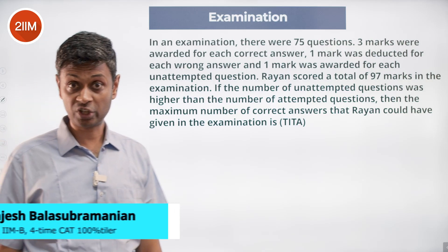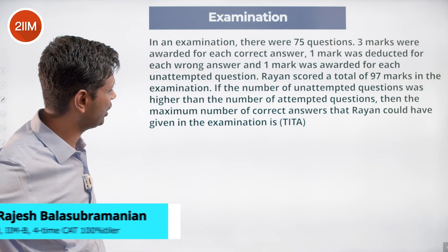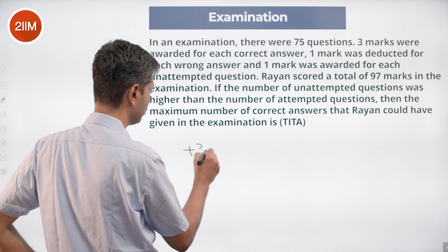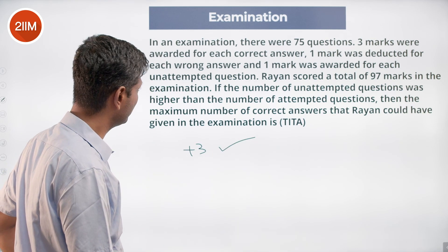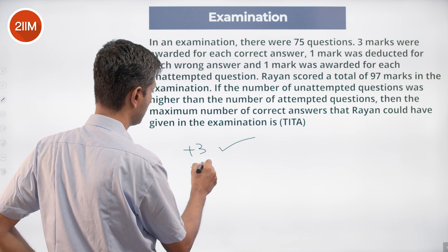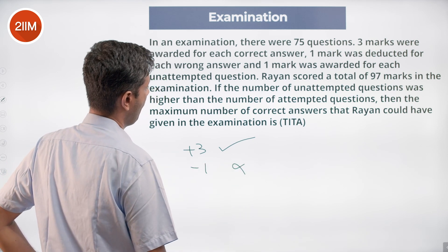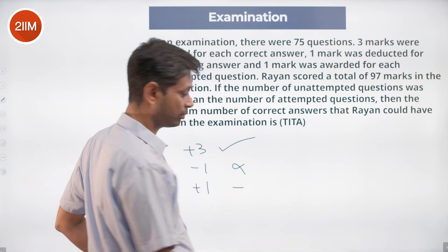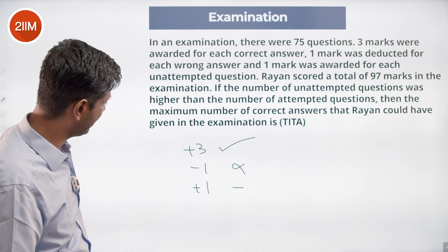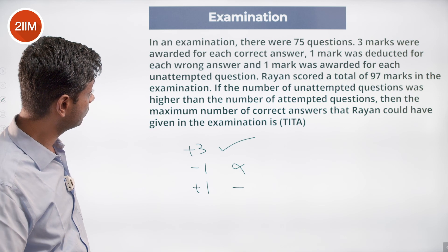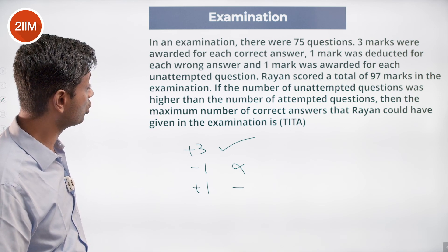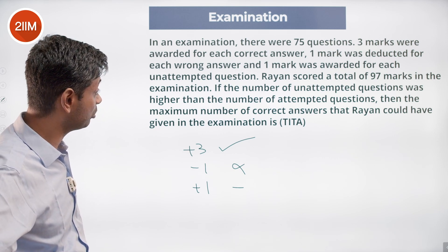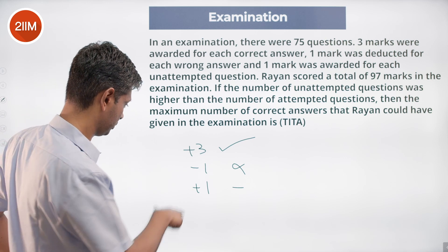It was a beautiful, super challenging question in an examination. There were 75 questions: three marks were awarded for each correct answer, one mark was deducted for each wrong answer, and one mark was awarded for each unattempted question. Ryan scored a total of 97 marks in the examination, and the number of unattempted questions was greater than the number of attempted questions.